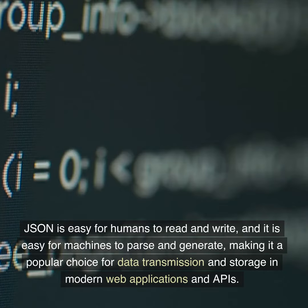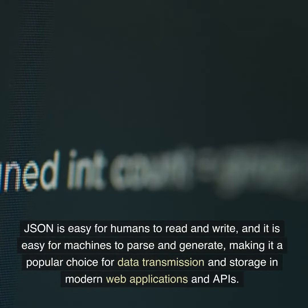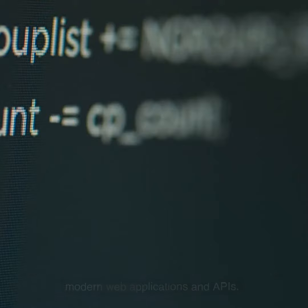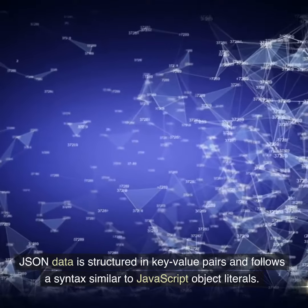JSON is easy for humans to read and write, and it is easy for machines to parse and generate, making it a popular choice for data transmission and storage in modern web applications and APIs.